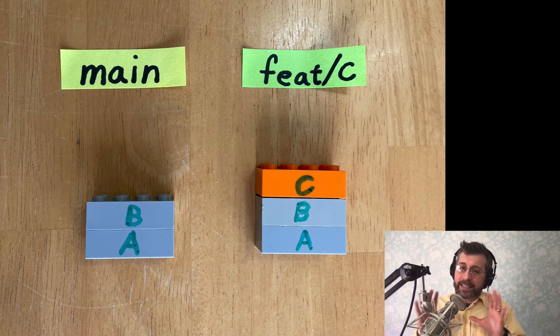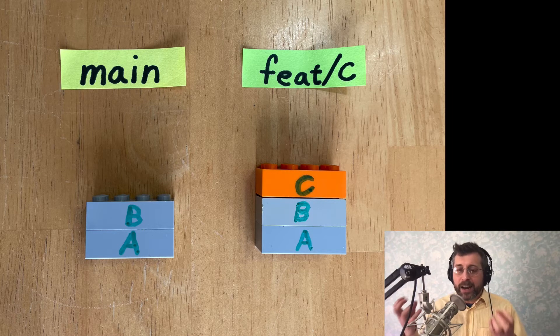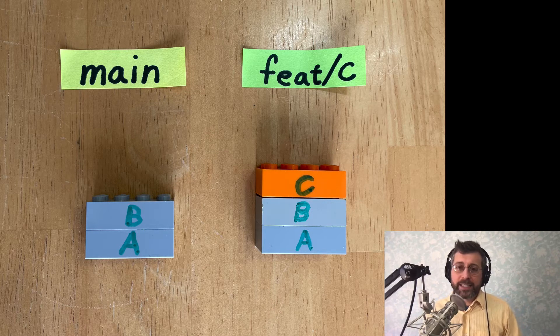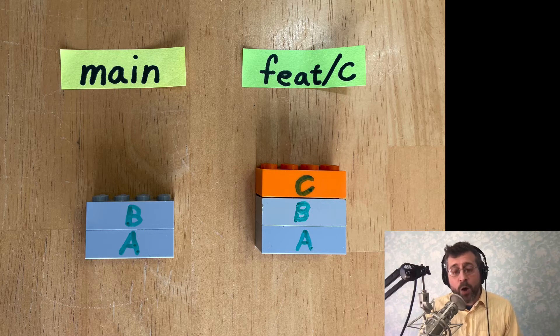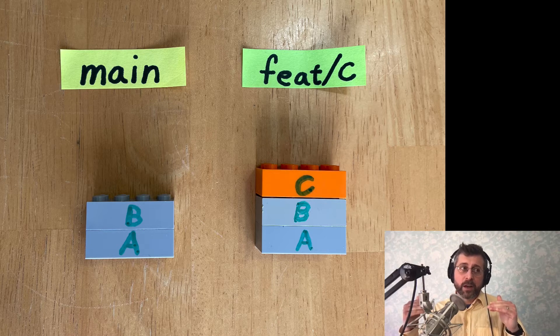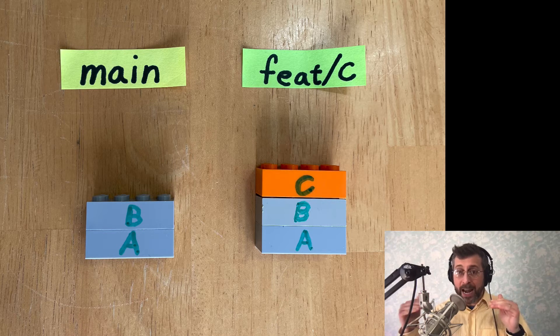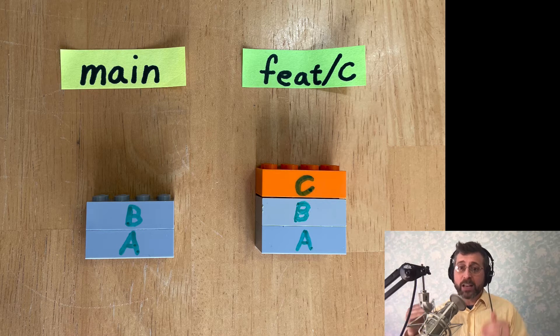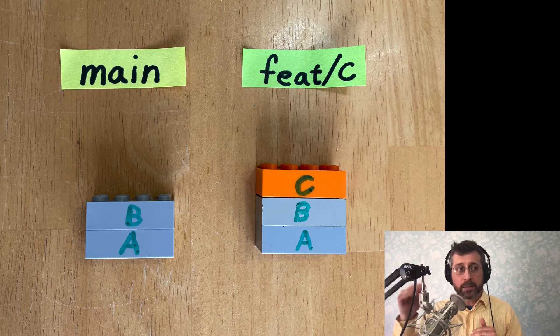And so rather than a diagram with bubbles, I find it makes a lot more concrete sense to me when I can look at this and say, oh, I see. I've got these blocks. The feature C branch, that stack of blocks has one extra commit on it, that commit C.